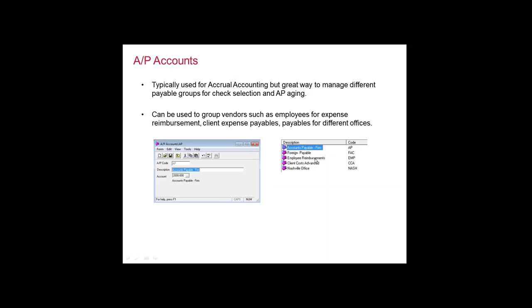I've created just an accounts payable firm AP account. I also have one for employee reimbursement — my attorneys pull in expense reports for out-of-pocket expenses that they've paid up front, and I want to pay them on a certain day. I also have client cost advances. Typically, we get a check request for court reporters, filing fees, things like that. We typically run on a daily basis. We could also create an AP account for multiple offices.